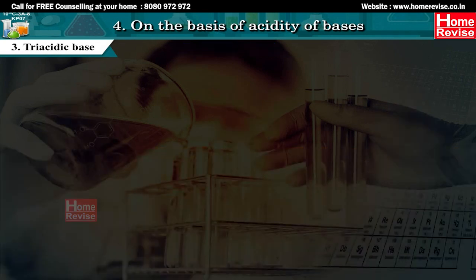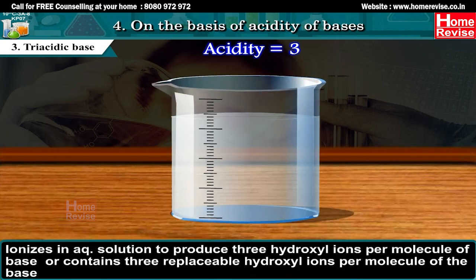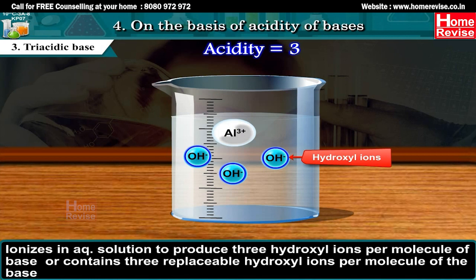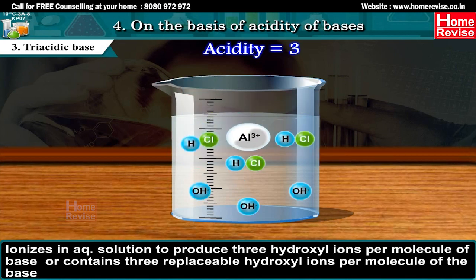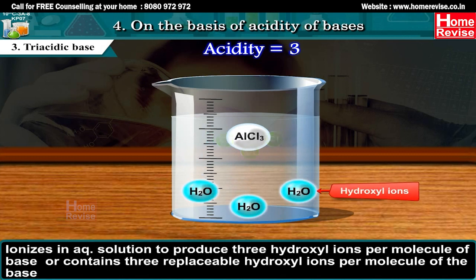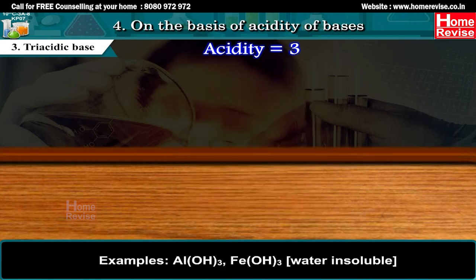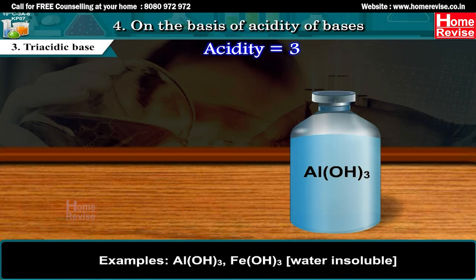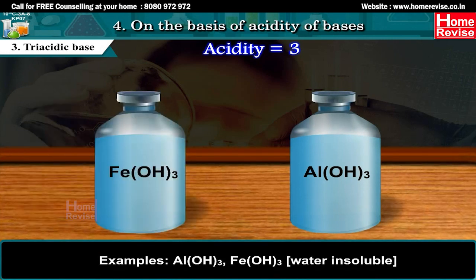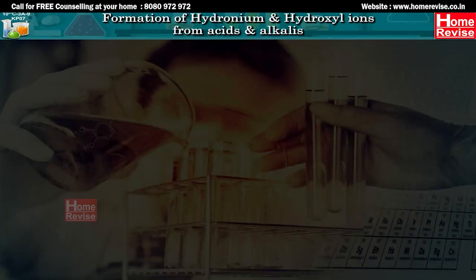3. Triacidic base (acidity = 3): ionizes in aqueous solution to produce 3 hydroxyl ions per molecule of the base. They dissociate in one step in aqueous solution. Examples: Al(OH)3 and Fe(OH)3 — water insoluble.